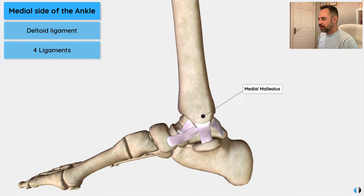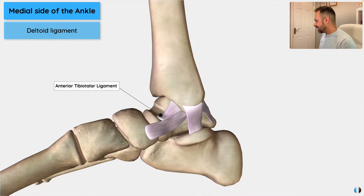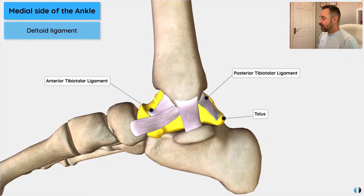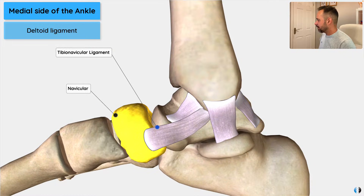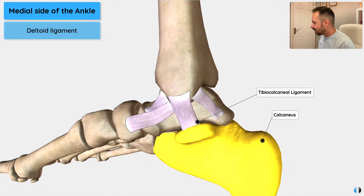Let's go through those four ligaments. First, we have the posterior tibiotalar ligament running from the medial malleolus posteriorly to the talus, and the anterior tibiotalar ligament, which is anterior to the joint — both running from the medial malleolus to the talus, either anteriorly or posteriorly. We then have the tibionavicular ligament, running from the medial malleolus of the tibia to the navicular bone — the longest of the four in length. Finally, we have the tibiocalcaneal ligament running from the medial malleolus to the calcaneus, also known as the heel bone.